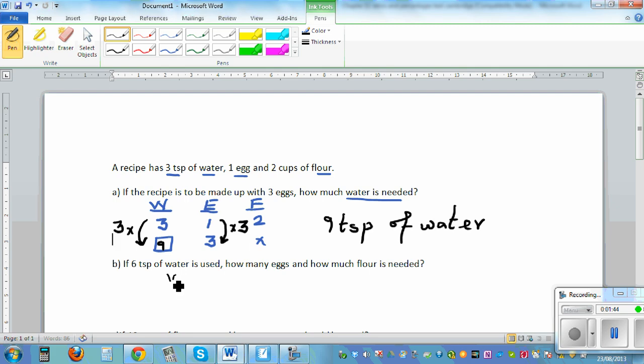Again, let's write water, egg, flour. So you got 3 teaspoons of water, 1 egg and 2 cups of flour.